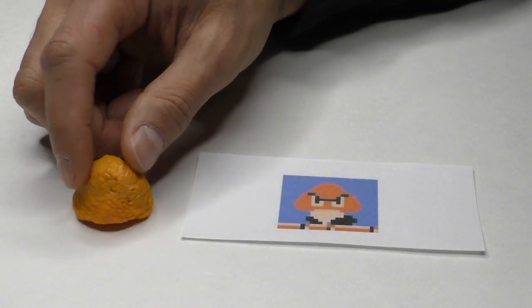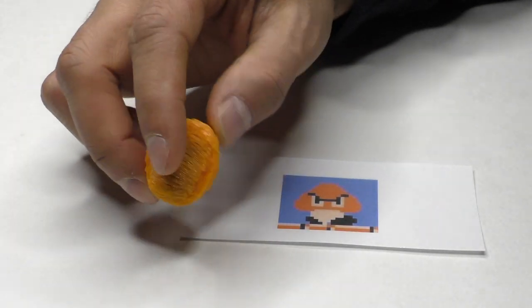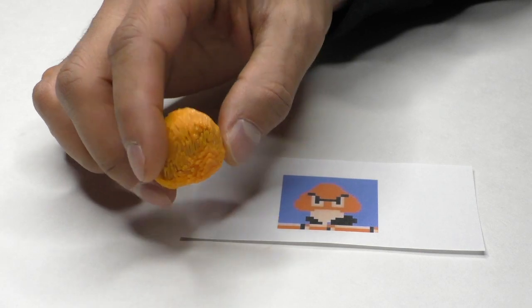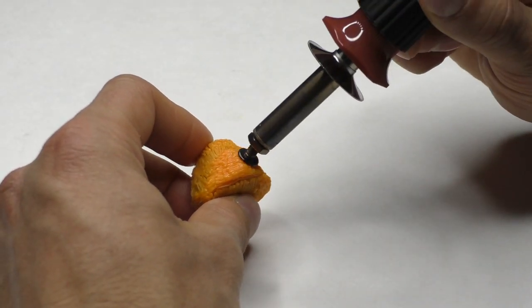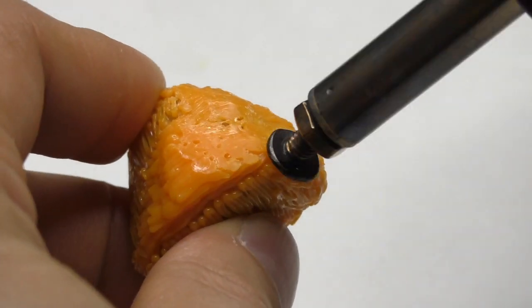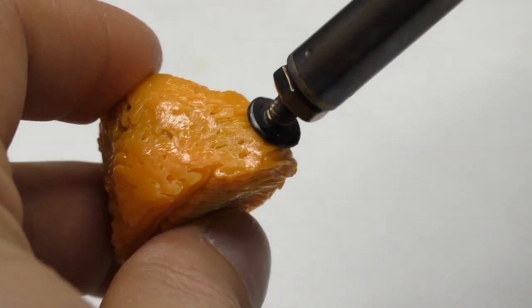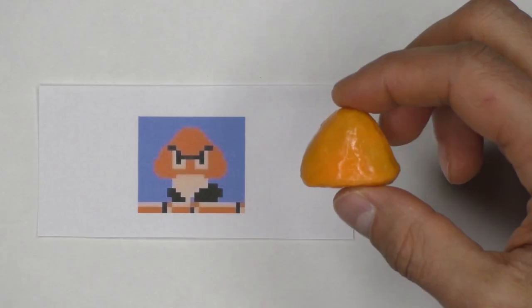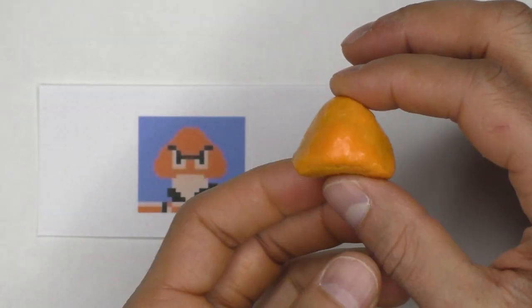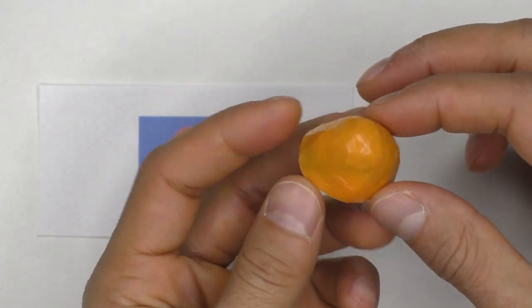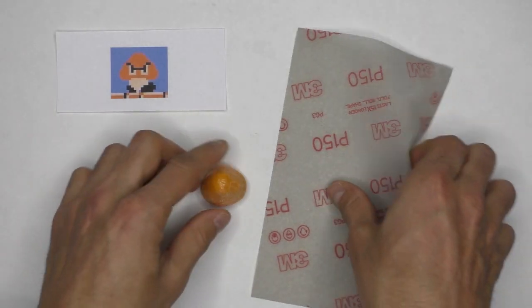This is the completed first layer of the Goomba and you can see how rough and uneven it is. And now I move on to smoothing this layer with a wood-burning tool. As with all the 3D pen videos you watch on YouTube, all this footage is heavily sped up.